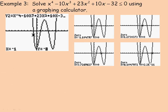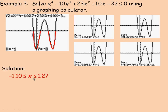On the last page, we solve where this quartic polynomial is less than or equal to zero. Notice it includes 'equal to,' which means we include the points where y is actually zero — using ≤ signs. On the graph, there are two regions where y is less than zero. The four screen captures show the boundary points: approximately negative 1.1 and 1.27 for the first region, and approximately 3.73 and 6.1 for the second. The solution is x is between negative 1.1 and 1.27, or between 3.73 and 6.1, with equality included at all four endpoints.